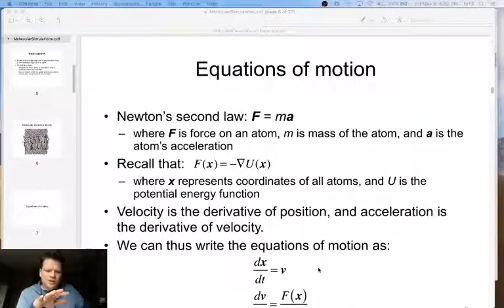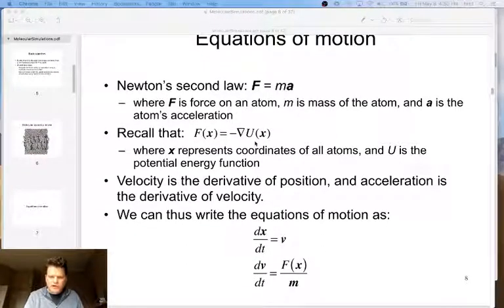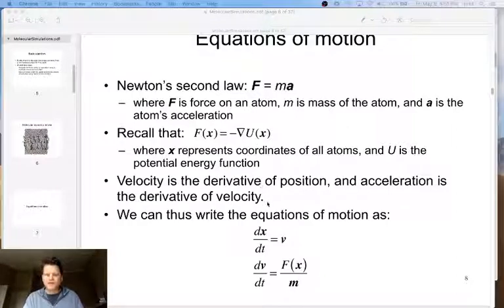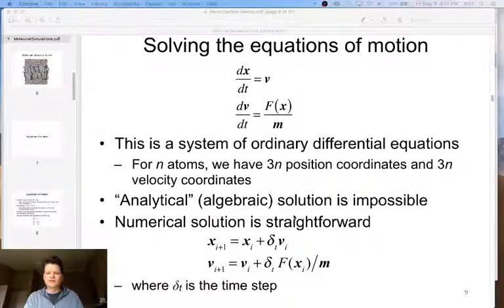So equations of motion. We know Newton's law is just force equals mass times acceleration. We also know that force at a given position X is going to be equal to the negative derivative of the potential energy function. So like for a harmonic oscillator, that's you end up with Hooke's law. But again, this potential energy function, it's like part of the Hamiltonian, and it's just based on the surrounding atoms. And then we know that velocity is derivative of position. Acceleration is derivative of velocity. We also know that acceleration is force divided by mass. So then we can rearrange these equations.